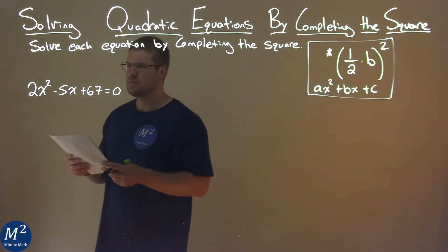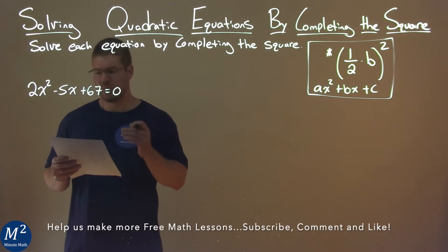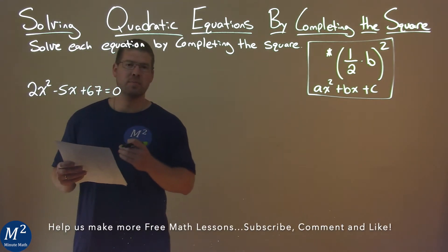We're given this problem right here: 2x squared minus 5x plus 67 equals zero, and we need to solve this by completing the square.